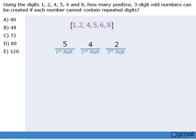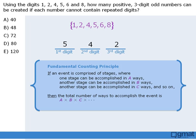Now that we have determined the number of ways to accomplish each stage, we can apply the fundamental counting principle and find the product of these stages to get 40. So we can create 40 three-digit odd numbers using the given digits. So our answer here is A.